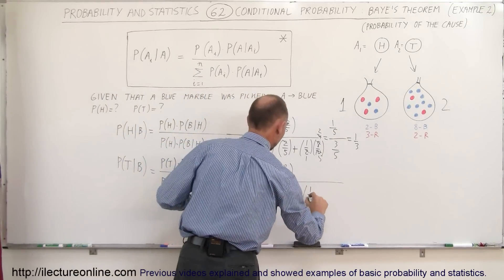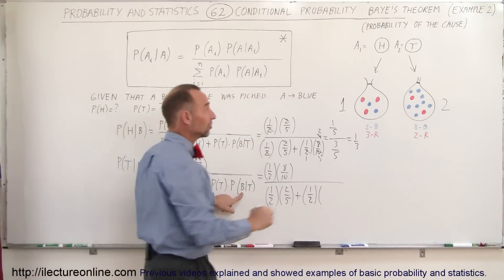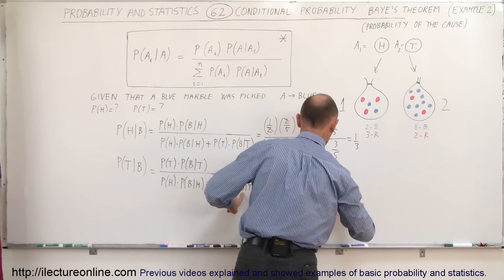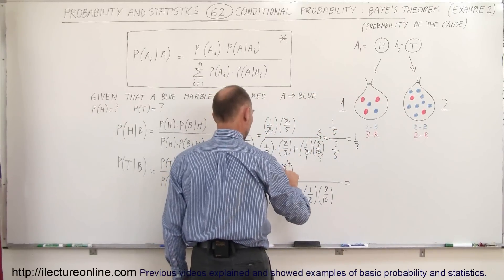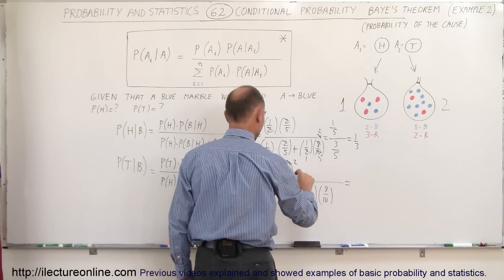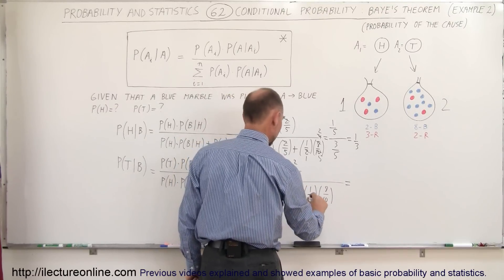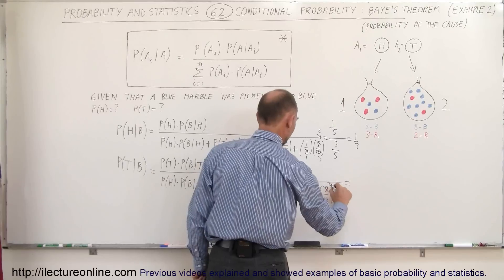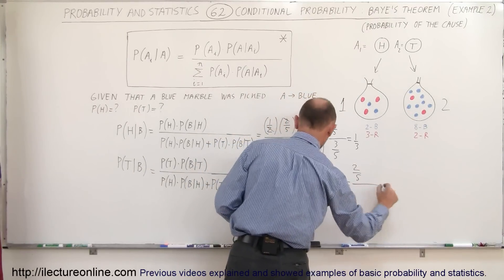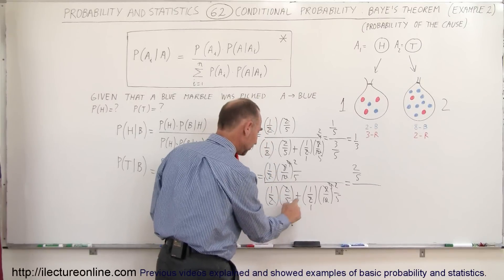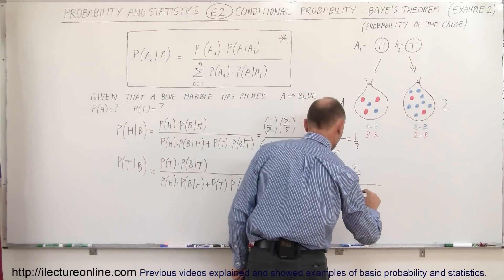Putting in the numbers: the probability of tails is one-half, times the probability of a blue marble given tails, which is 8 out of 10. Divided by: one-half times 2 out of 5, plus one-half times 8 out of 10. Simplifying the numerator — one-half times 8 over 10 — gives 2 fifths. The denominator is 1 fifth plus 2 fifths, which is 3 fifths. So we get 2 fifths divided by 3 fifths.